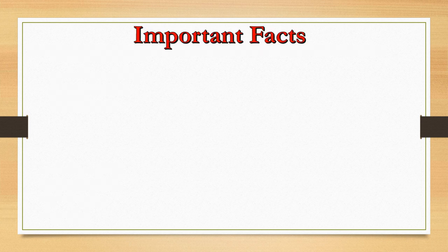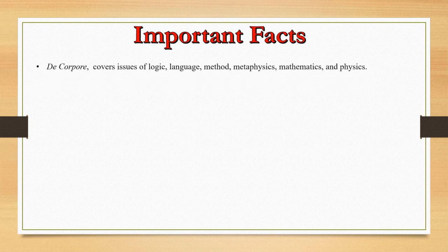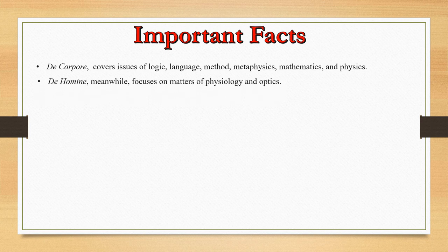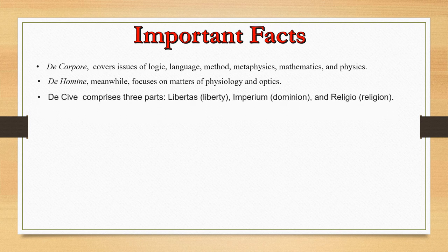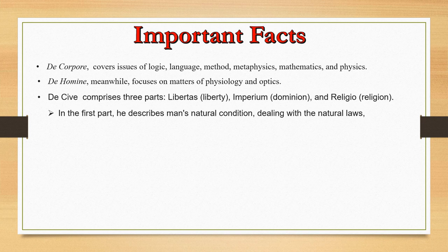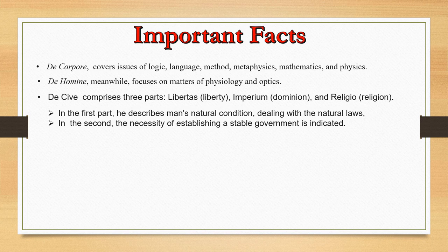Let us discuss some important facts about the topic. De Corpore covers issues of logic, language, method, metaphysics, mathematics and physics. De Homine focuses on physiology and optics. De Cive comprises three parts: liberty, dominion, and religion. In the first part he describes man's natural condition dealing with natural laws. In the second part, the necessity of establishing a stable government is indicated. In the third part he writes about religion.